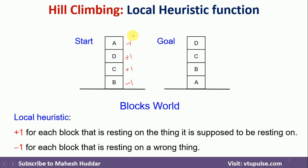When it comes to the goal state, all blocks are present at the correct positions, so everything is given plus one. The total value of the goal state under this local heuristic function is plus four.